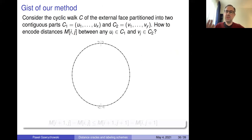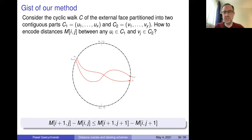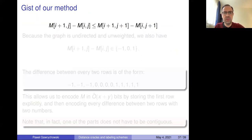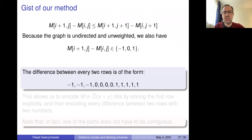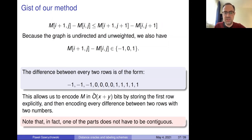The key property used is the Monge property: when you have nodes on the outside and two shortest paths that cross, you can write the triangle inequality. Writing down distances between nodes on the left and right gives a big matrix. With the triangle inequality you get an inequality, and for unweighted graphs adjacent entries in the matrix differ by at most a small amount — meaning this matrix can be compressed to O(x + y) bits where x and y are the number of nodes on each side.